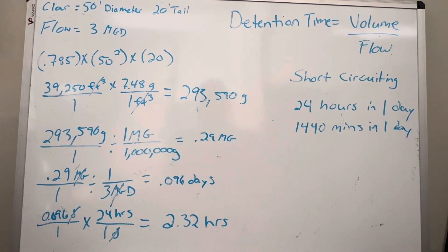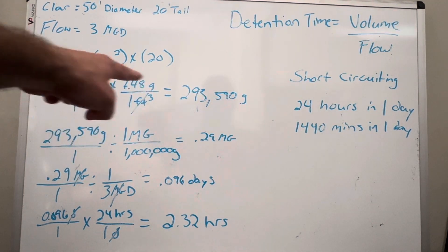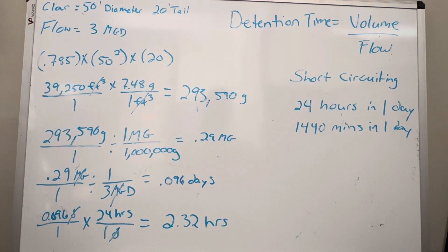If you did not get that number by multiplying 0.785 times 50 squared times 20, let me know and maybe we can figure out where you went wrong. So then you multiply 39,250 cubic feet by 7.48 gallons in a cubic foot. That was also covered in my volume video. The cubic feet cancel out and we're left with gallons, 293,590 gallons.